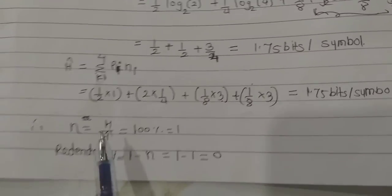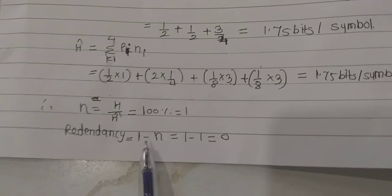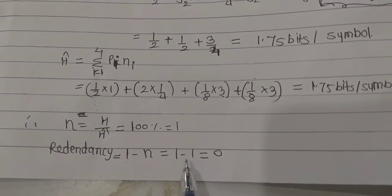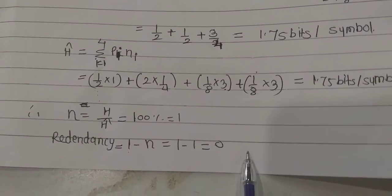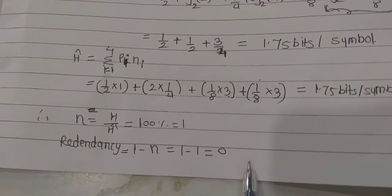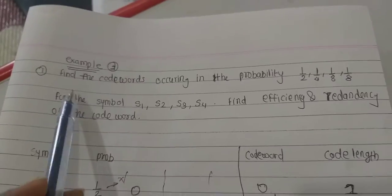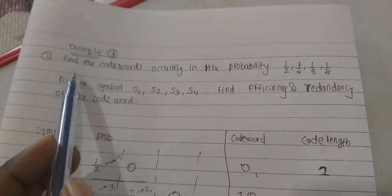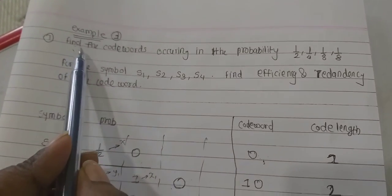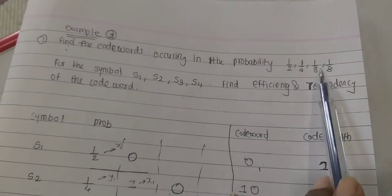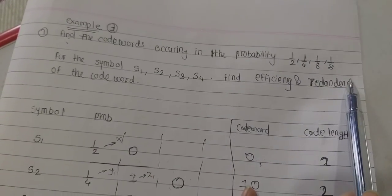The efficiency is H/H_cap = 1.75/1.75 = 1, which is 100%. The redundancy is 1 − η = 1 − 1 = 0. So there is zero redundancy. Now let's check another example: find the code words for symbols with probabilities 1/2, 1/4, 1/8, 1/8.